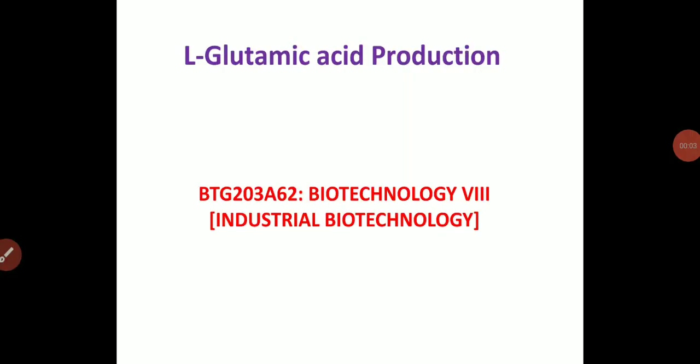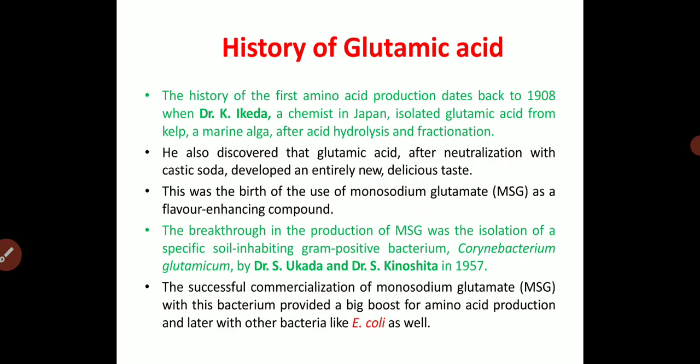Dear students, welcome back to the online lecture series on biotechnology. In this video lecture, we are going to discuss a topic called L-glutamic acid production. This is industrial biotechnology, which talks about the production of important biological products from microorganisms — strain improvement, screening of microorganisms, production of metabolites through bioreactors. Especially in this video, we are discussing monosodium glutamate production from Corynebacterium species.